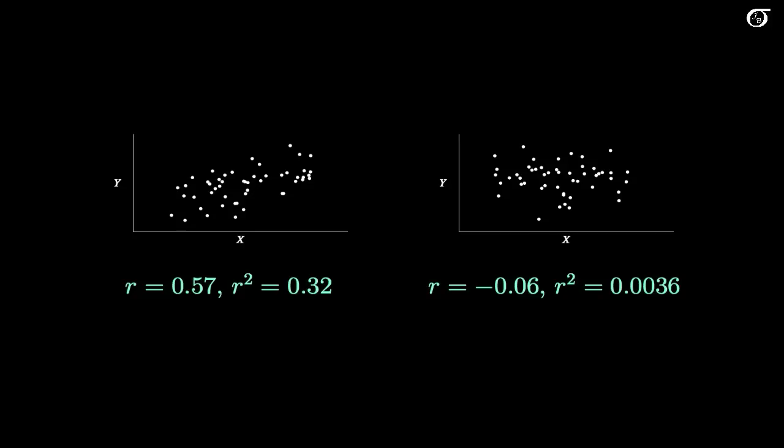A couple of different ones over here on the right. We don't have much going on. We have an R and R squared very close to 0, because there's pretty much a random scattering of points. Over here we have a bit more variability, but there is an increasing trend, so we get an R value of 0.57 and an R squared of 0.32.